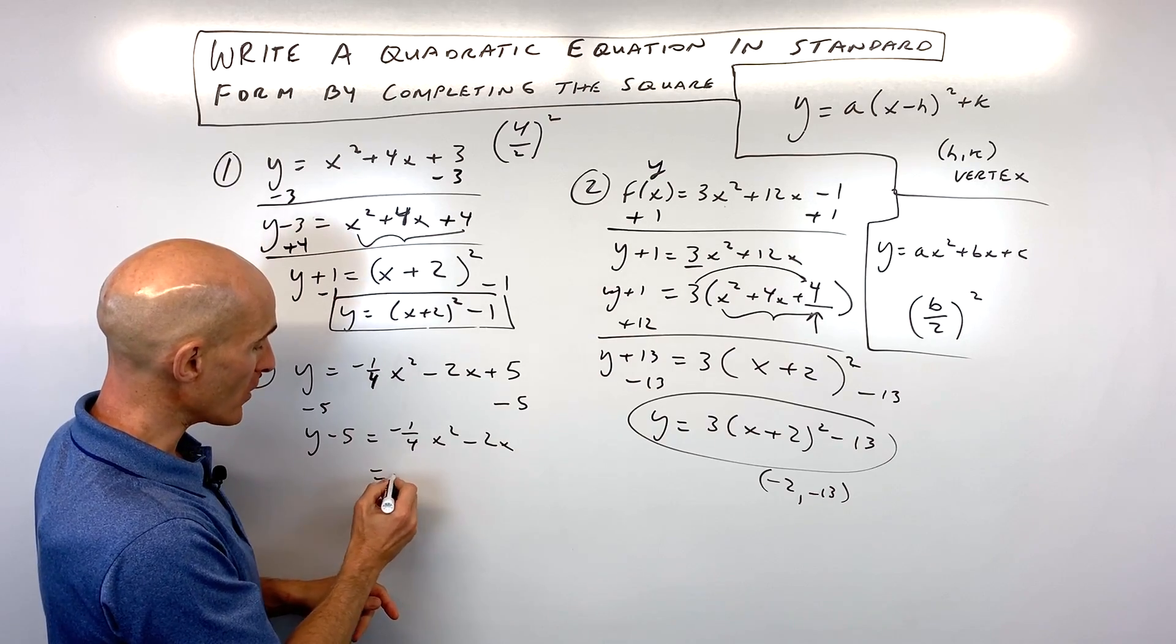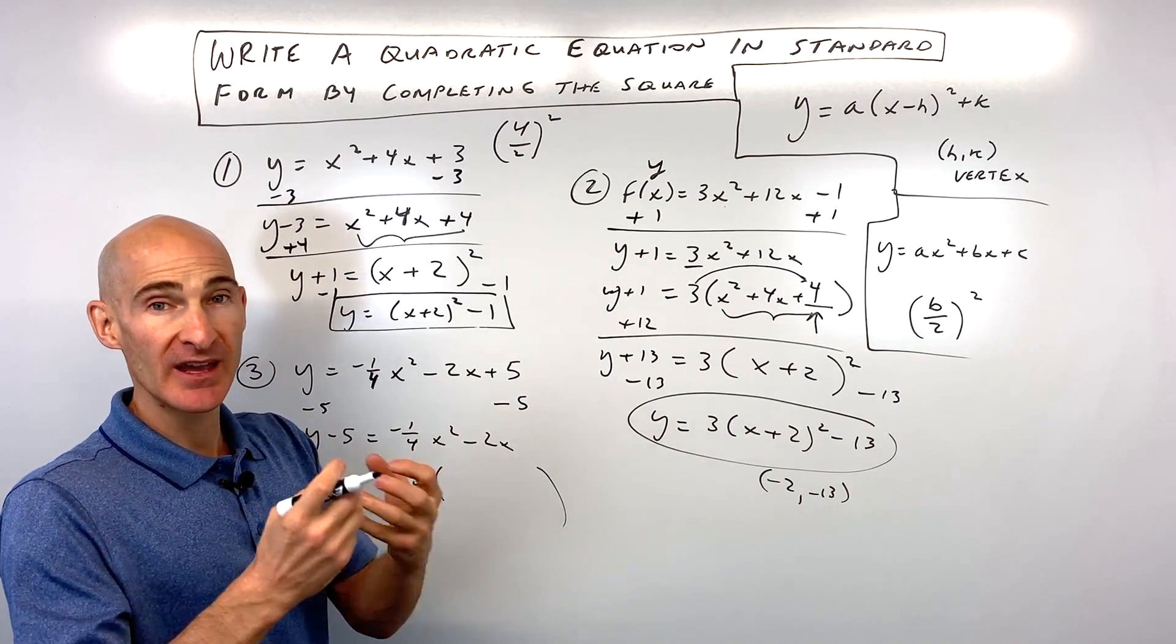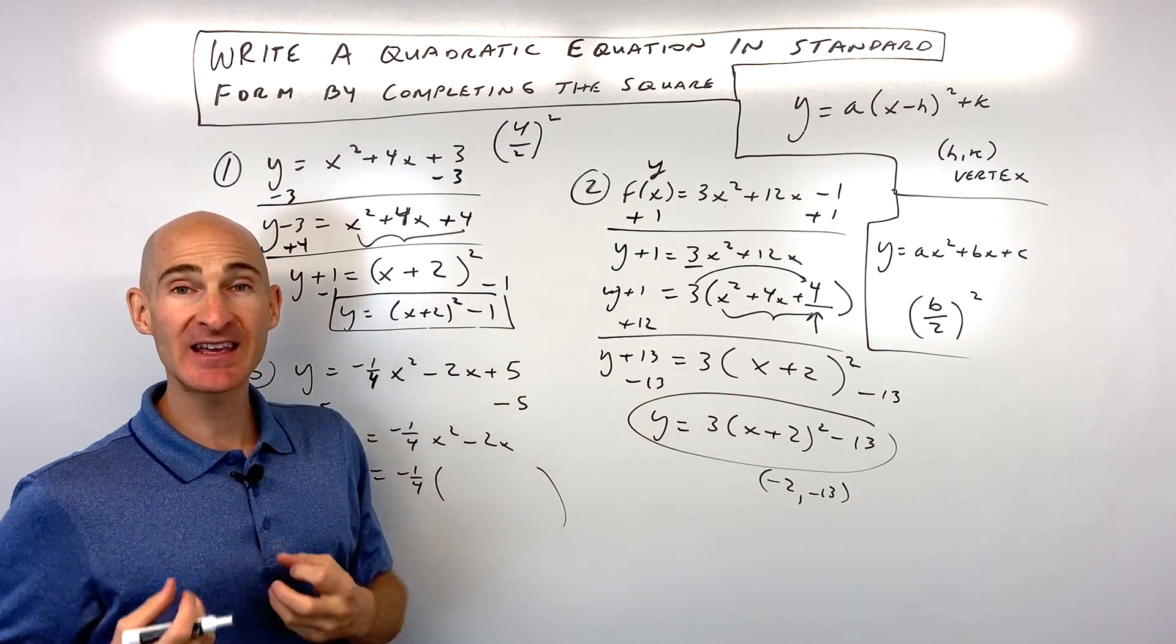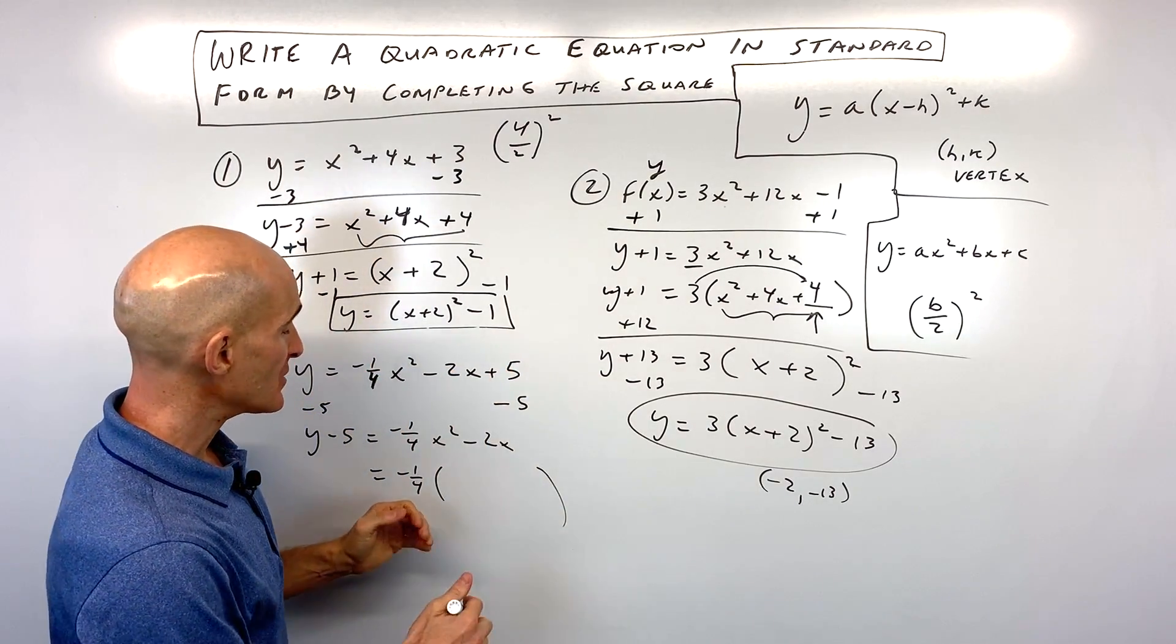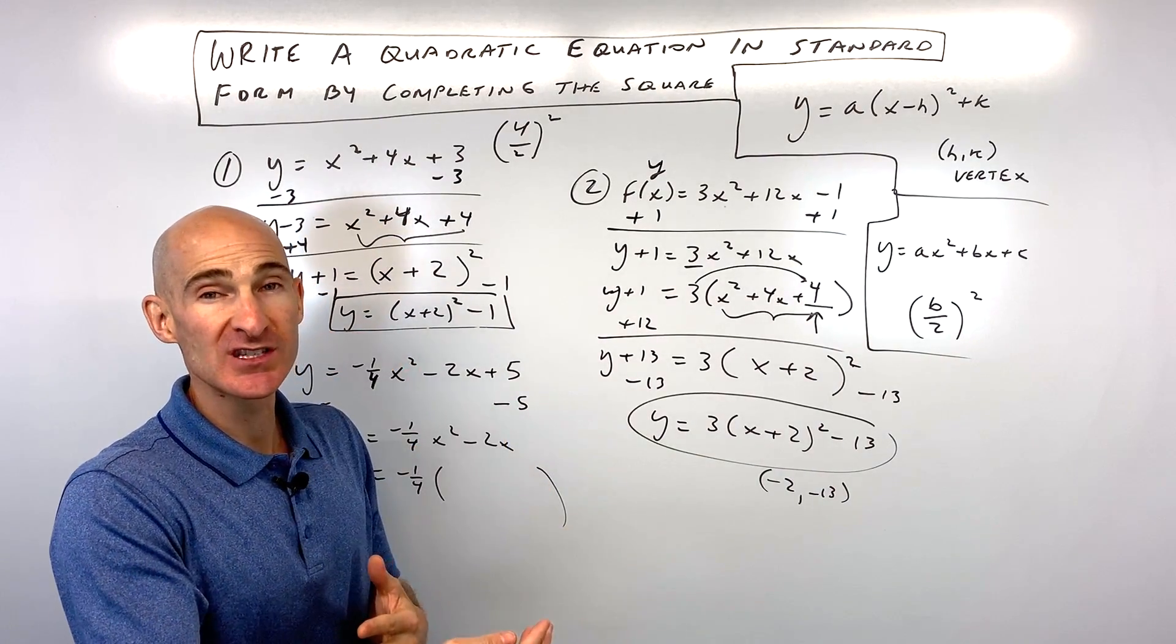I'm going to factor out the negative 1/4. Okay, now here's the thing. When you factor out, okay, something, it's like dividing it out, right? And so what you have to do on the inside of the parentheses here is you have to multiply by the reciprocal.